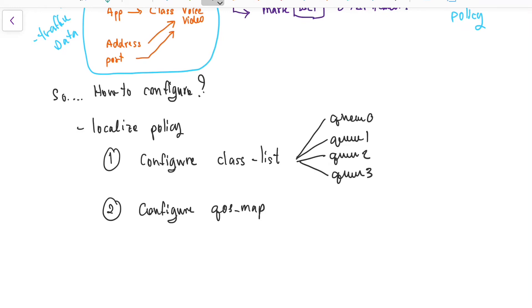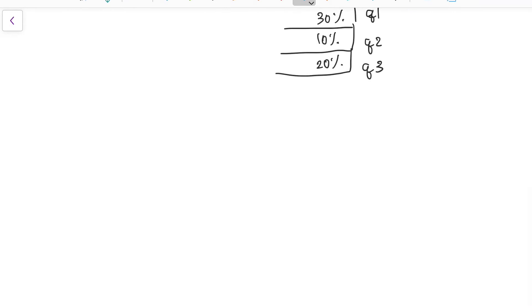Once we have a class list already, then we're going to configure the QoS map, which is the mapping between class and queue. So in step one, we have a class already, then we're going to put the class into the queue and reserve the bandwidth like 20% into the Q0, 30% to the Q1, 10% to the Q2 respectively.